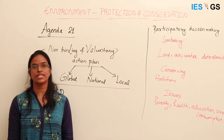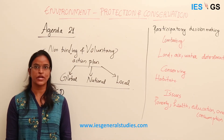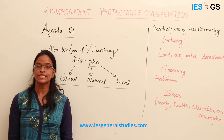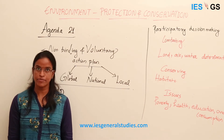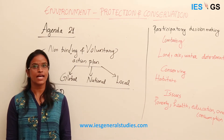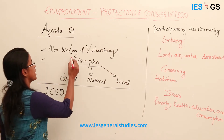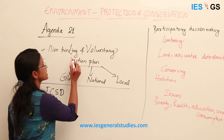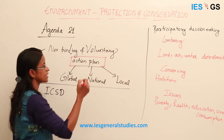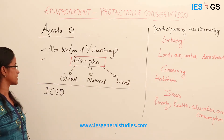Agenda 21 is an outcome of the Rio Earth Summit of 1992 and it is mainly concerned with sustainable development. This Agenda 21 is actually an action plan, which gives guidelines on what actions should be taken for sustainable development.